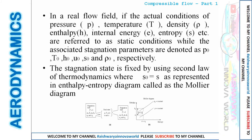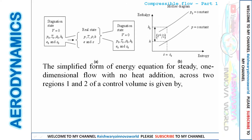The stagnation state is fixed using the second law of thermodynamics, where s₀ = s, meaning entropy remains constant. This can be represented on a Mollier diagram. Recalling the energy equation: h₁ + ½V₁² = h₂ + ½V₂². In our condition, we consider a calorically perfect gas where dh = Cₚ dT, giving Cₚ T₁ + ½V₁² = Cₚ T₂ + ½V₂².